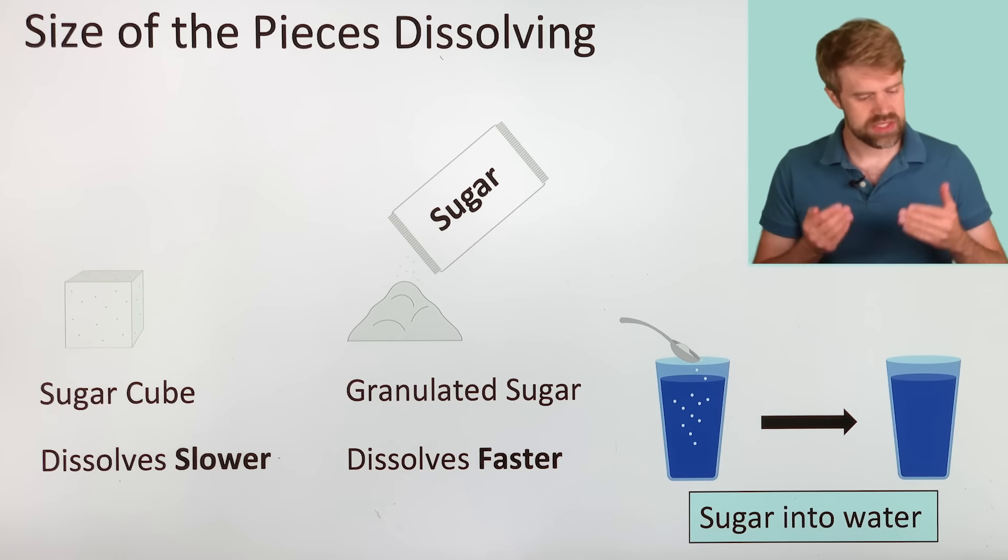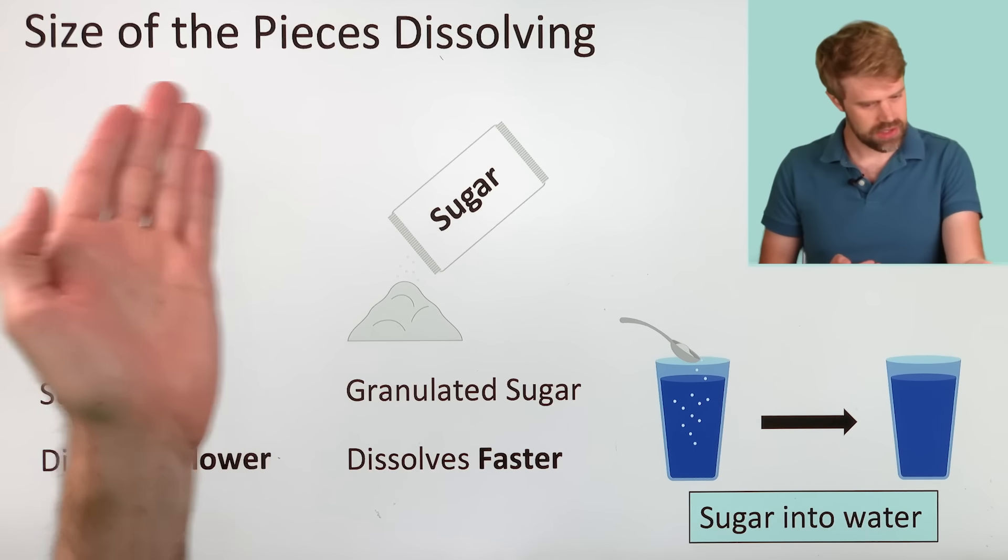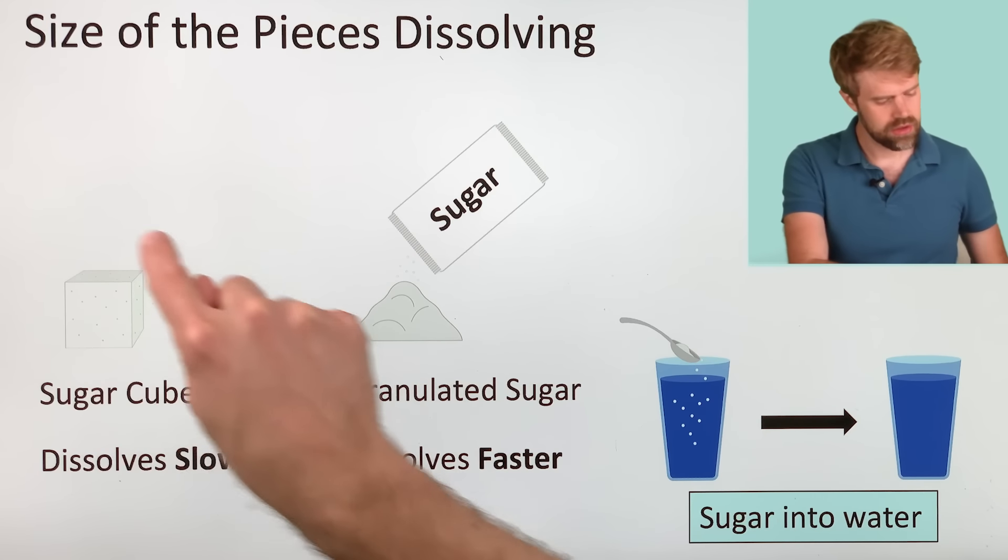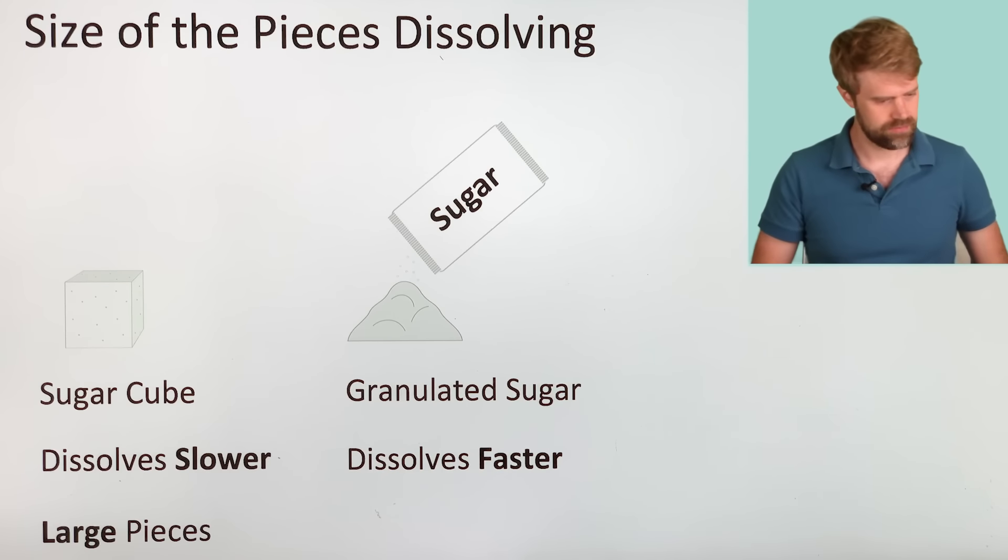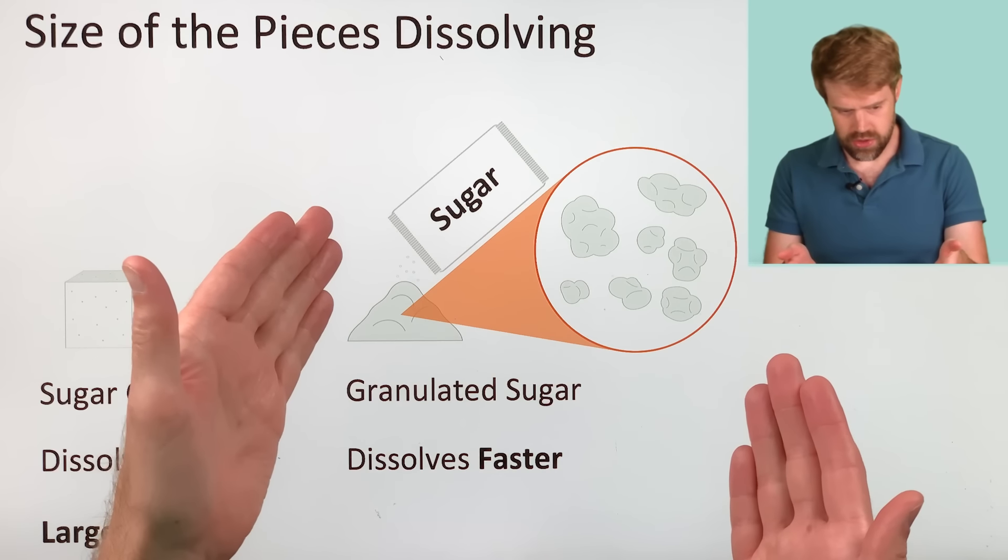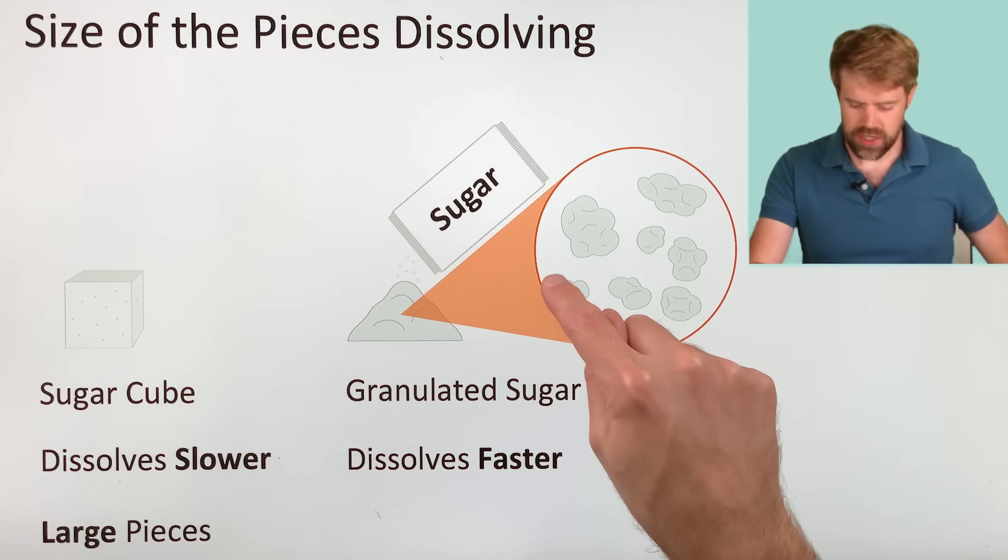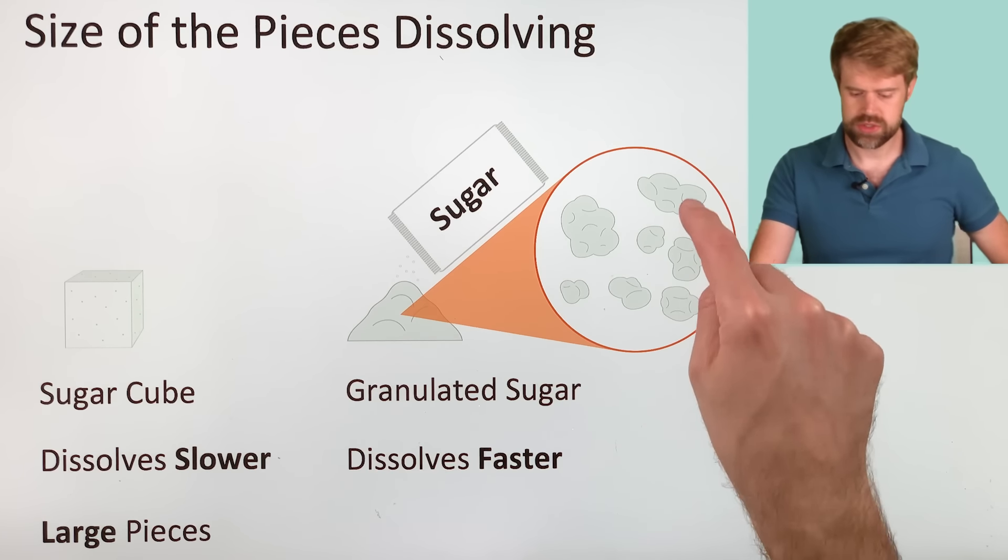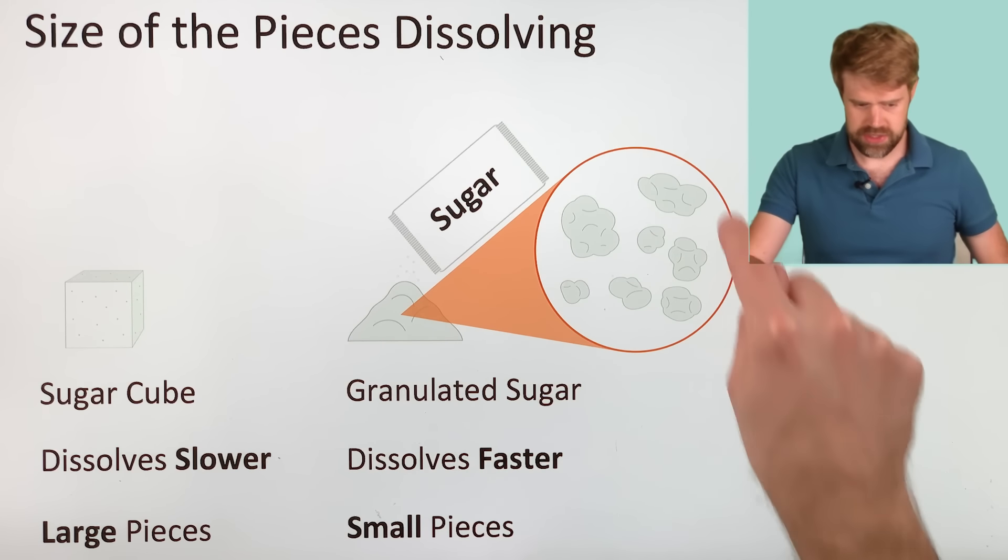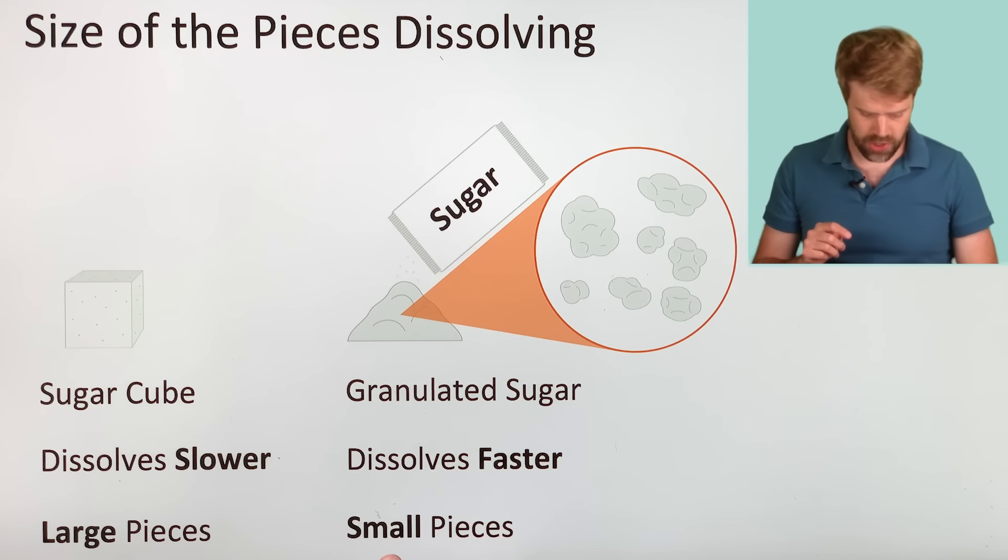What can we say about the size of the pieces here? For the sugar cube, we're talking about the cube itself, so that's pretty large. The granulated sugar, if we look at it up close, we'd see it's made of tiny little grains, almost like grains of sand. So the size of the pieces is way smaller here.